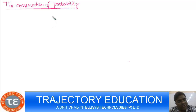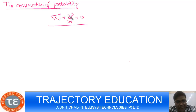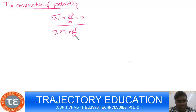In electrodynamics we read about conservation of charge, where we saw a certain kind of equation. Whenever you have phenomena involving flow of something — like flow of charges or flow of fluid — you have some conservation law. For flow of current and charges you have a charge conservation law, and in the case of fluid we have conservation of mass.